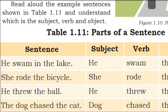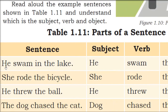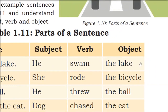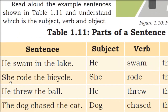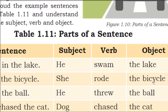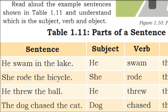He swam in the lake. He is the subject. Swam is the verb — some work or task being done. The lake is the object, because that is where he is swimming. She rode the bicycle. She is the subject, riding is the verb, and bicycle is the object — what she is riding.